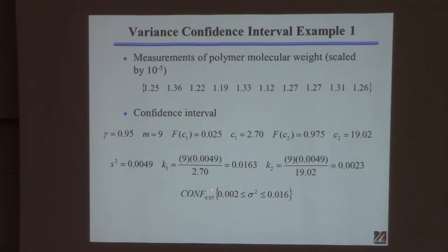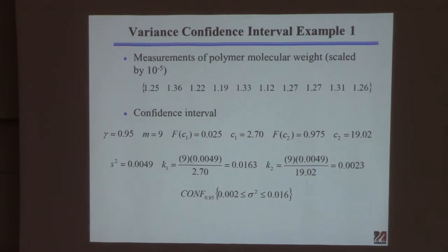I'm 95% confident the true variance is in this range. This range is really large — an order of magnitude difference between the lower and upper limits. This tells you a valuable lesson: if you want to be confident about the variability of a system, you need a lot more than 10 samples. Ten samples may be enough to estimate the mean, but it's really not enough to get confidence about the variability.